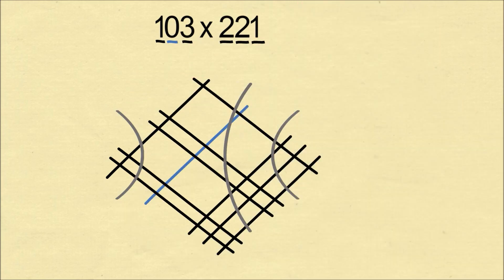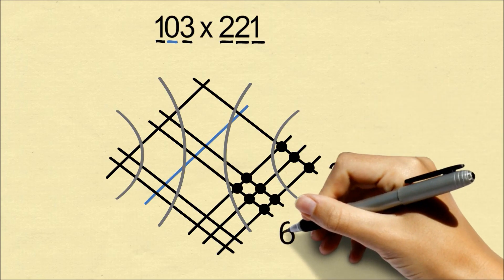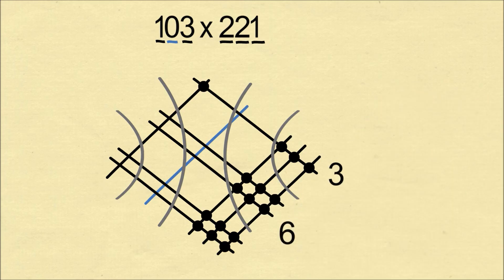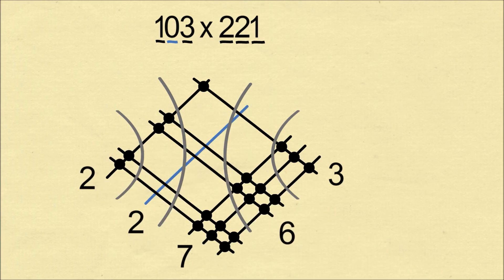After we group vertically aligned intersections, we count the number of intersections in each group. But we make one adjustment, we don't count any of the intersections with the zero line, because zero times anything is zero. And that gets us to our answer of 22,763.